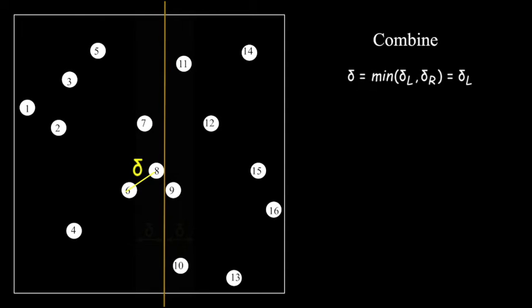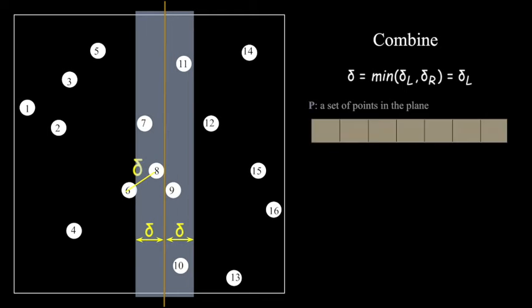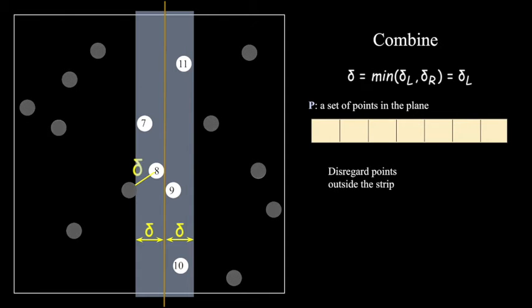So here comes the trick. If we look at point 1 and point 16, we know that they cannot have a distance shorter than delta. Likewise, it is safe for us to say that if there exists a pair whose distance is shorter than delta, then both points from the pair must be within delta distance from the middle line. Therefore, we can just simply disregard all those points outside of this strip of 2 delta width.